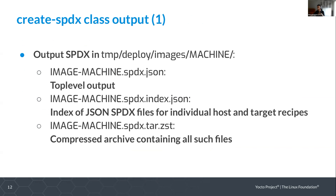The main output of the create-spdx class is in tmp/deploy/images/machine, the same directory as your standard image. The top-level output file is called image-machine.spdx.json. A related file is image-machine.spdx.index.json, which is an index of individual JSON files describing the host and target recipes. You also have an archive of all such JSON files — one for each recipe used to build the image and the software included on the target.